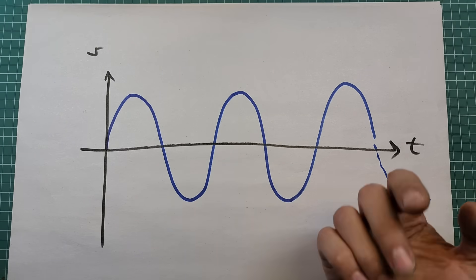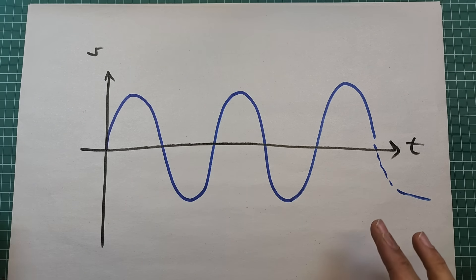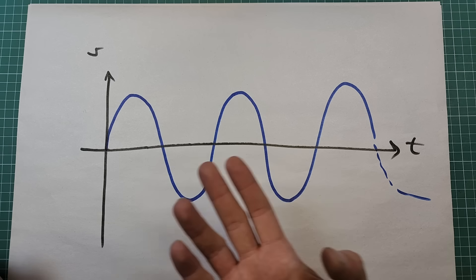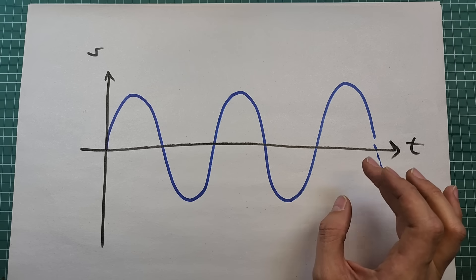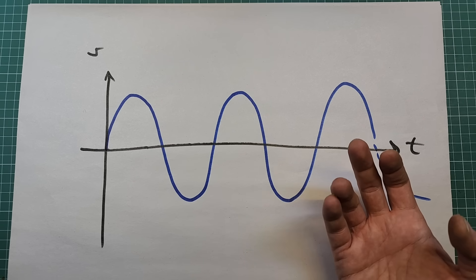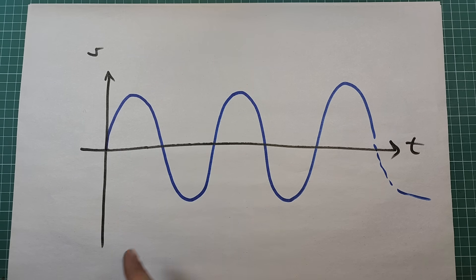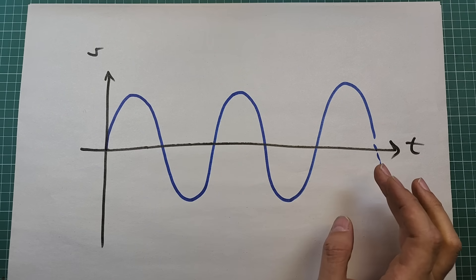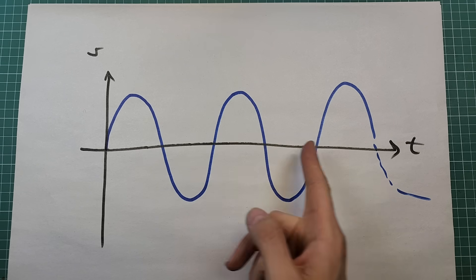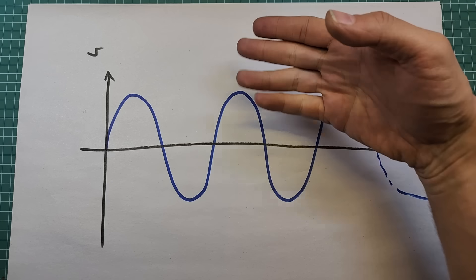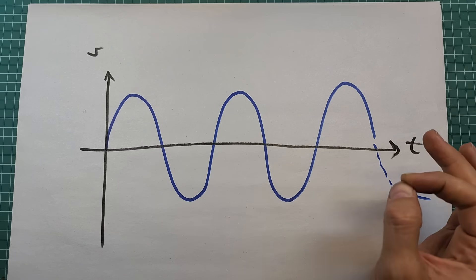The waveform of mains power, or any type of alternating voltage, is sinusoidal. When we connect an electrical load such as an LED strip or a lamp to the mains voltage, this sinusoidal waveform also affects the light produced by the lamp — the light level goes up and down just like the waveform, which may not be visible to the human eye but it really exists.